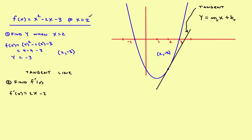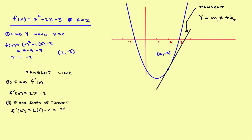Now, what you want to know is the slope of the tangent line when x is equal to 2 — and that's what the derivative gives you. Step number three: find the slope of the tangent line by evaluating the first derivative at x equals 2. Plugging in 2: 2 times 2 minus 2 gives you 4 minus 2, which is 2. So the slope of the tangent line is 2.